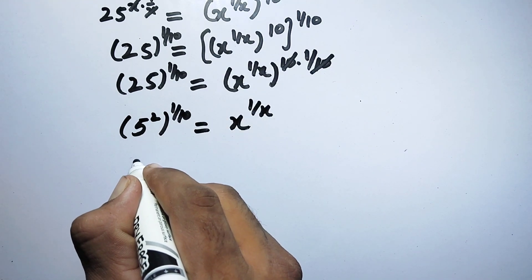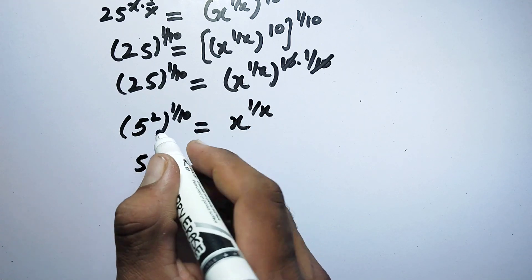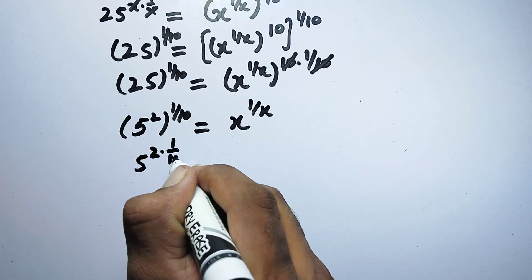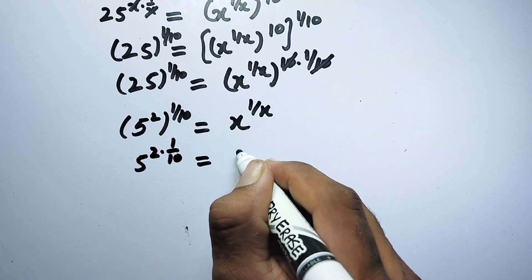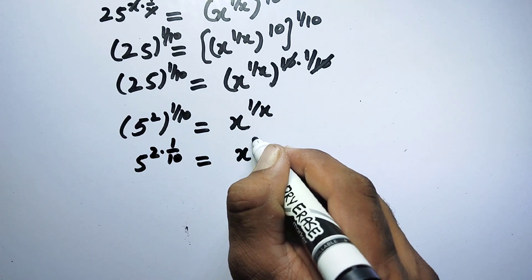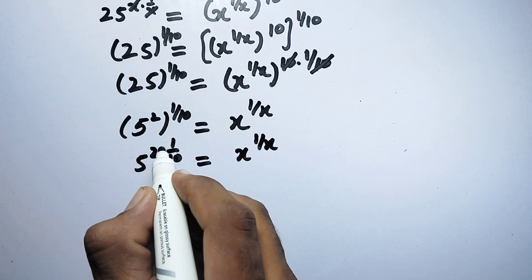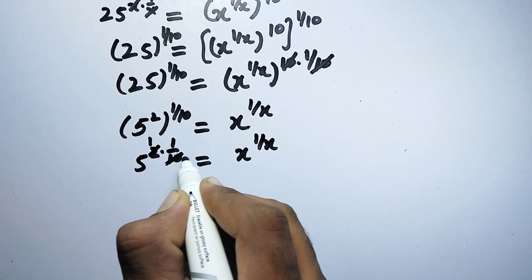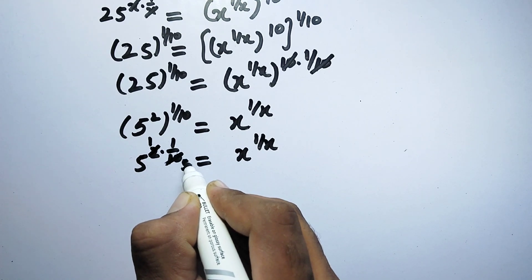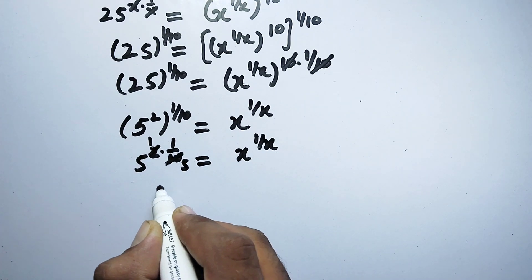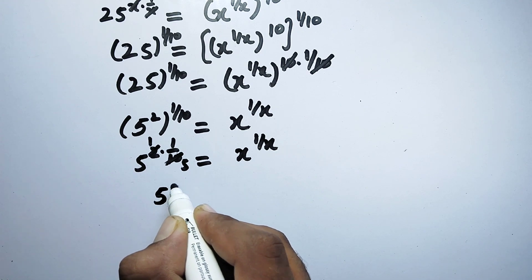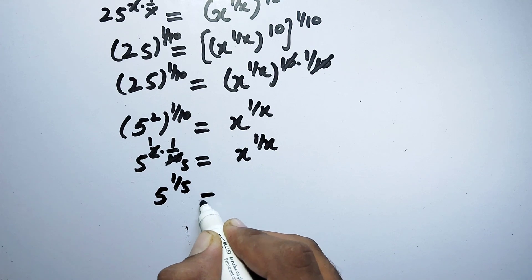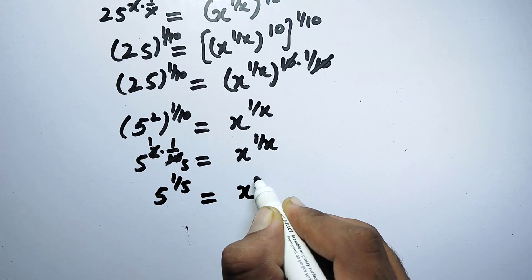And now here again we will use the exponential rule. So here it will be 5 to the power 2 times 1 over 10, which equals 5 to the power 2 over 10. Here 2 times 1 is 2 and 5 times 2 is 10, so we get 5 to the power of 1 over 5 is equal to x to the power of 1 over x.